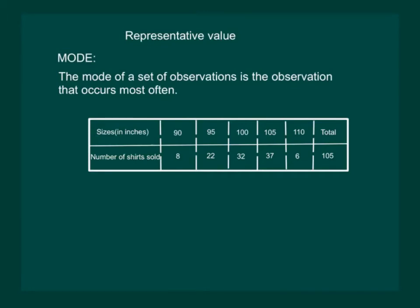Let us take up this example and try to understand the definition of mode and also the need for mode. This is a record maintained by a shopkeeper who sells shirts. He kept a record of the sale of sizes of shirt. In one week, he sold total 105 shirts.